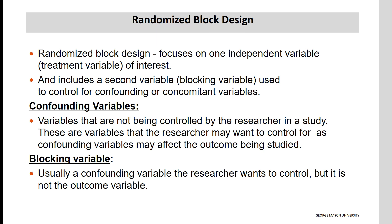Confounding variables are variables that are not being controlled by the researcher in a study. These are variables that the researcher may want to control for, as confounding variables may affect the outcome being studied. When one controls for a variable in a statistical analysis, it means that the variable is included in the analysis, and thus any effects that this variable may have on the outcome, or dependent variable, have been accounted for in the analysis.